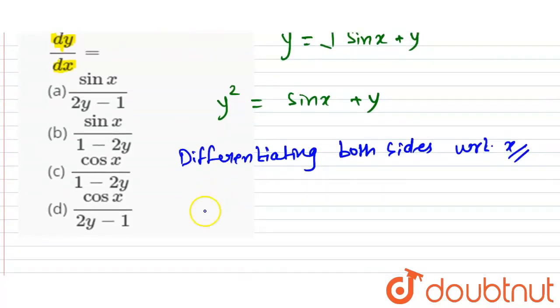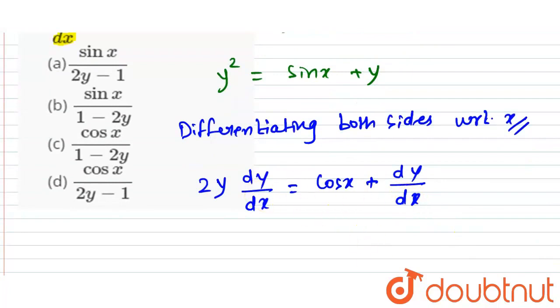We can write this as 2y dy/dx equals cos x plus dy/dx. Now we take dy/dx to the left hand side.